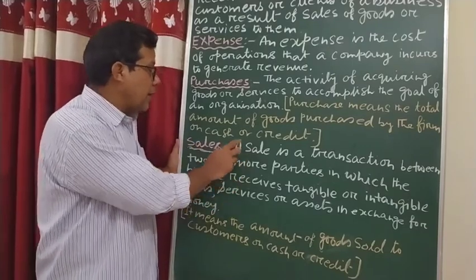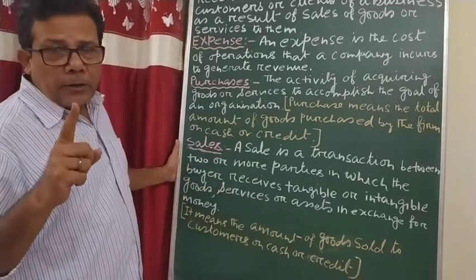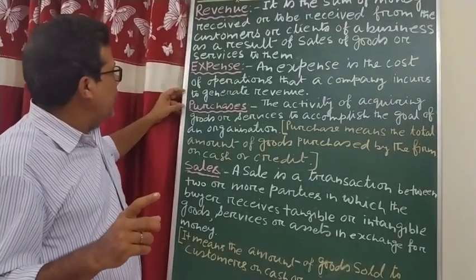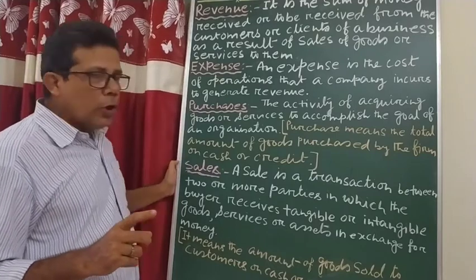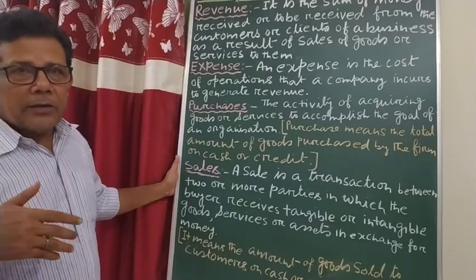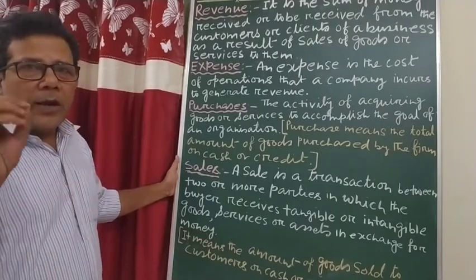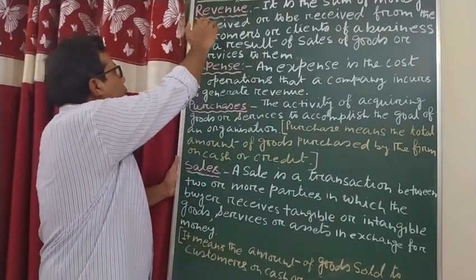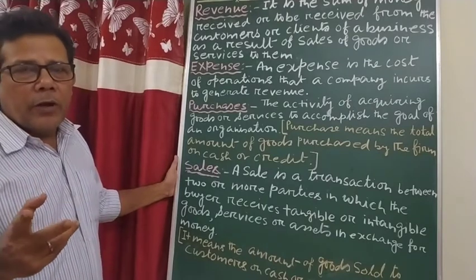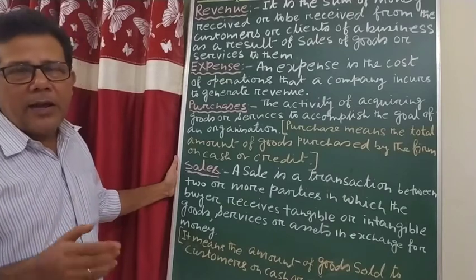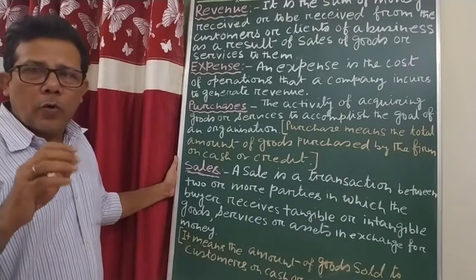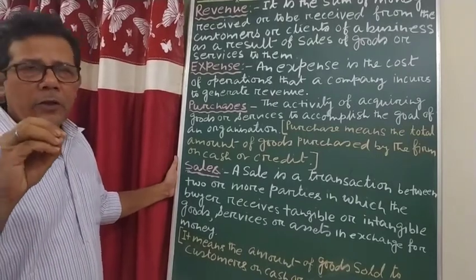So once more: in today's class I discussed four accounting terms — revenue, expense, purchase, and sales. In my online live classes I will give you practical examples to make these very clear. What you need to learn is the definition of these terms. In the examination, only the definition will be asked — questions like 'define revenue,' 'define sales,' 'define purchase,' or 'define expense.' Please read it properly and try to understand the meaning. You can write the definition from here or in your own words, but the meaning should be very clear. Thank you so much for today's class.